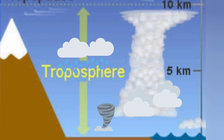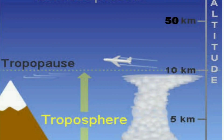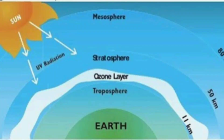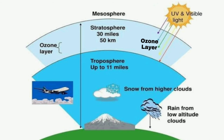Beyond the troposphere, up to a height of about 50 km from the earth is the layer called the stratosphere. In the stratosphere, there is a layer of gas called ozone. Ultraviolet rays — UV rays — coming from the sun are harmful for living things.